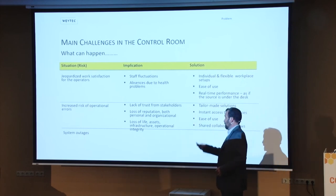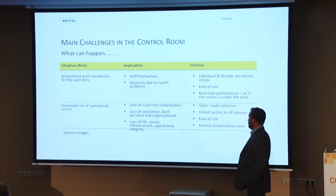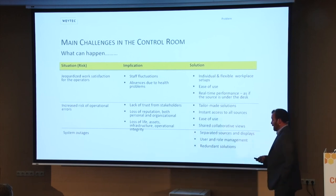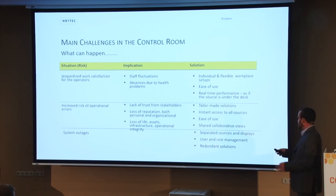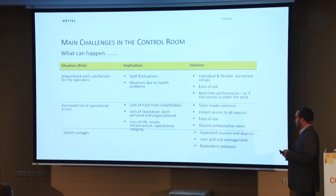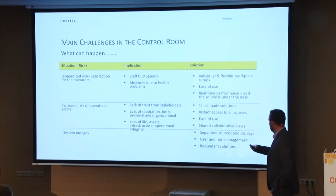Another risk you can have everywhere — also at home or in a normal office — is system outages. A suggestion is to keep systems and subsystems separated with different sources and different displays, and prefer a user and role management solution. Redundancy is mandatory.